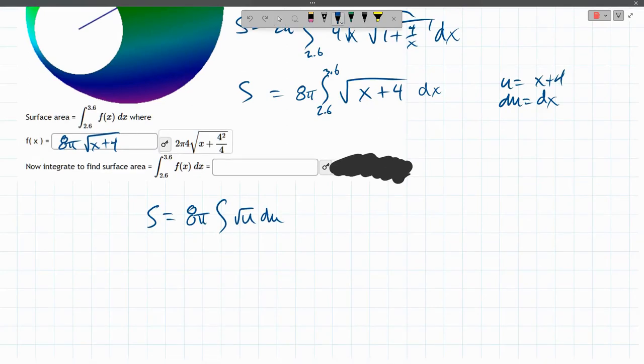But how do we integrate this? Well, we're going to use the anti-power rule. So this is u to a 1 half power. So add one to that. That's u to the 3 halves power. Times the reciprocal 2 thirds. Still have the 8π. Not going to write endpoints until we unsubstitute.